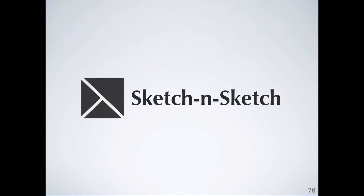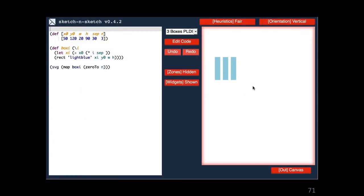We implemented live synchronization in a web-based tool called Sketch and Sketch, consisting of about 6,000 lines of Elm code. Let's take a look at some examples. Here's our three boxes. Sure enough, if we drag the third box, all boxes translate together as x0 changes. If we drag the second box, the separation changes. And if we drag the first, x0 changes.